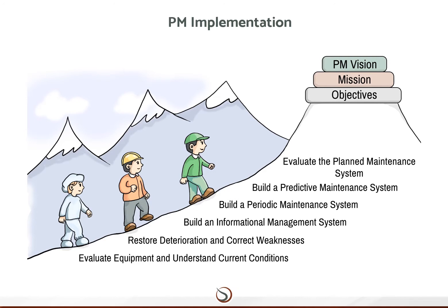This cannot be done all at once — this would be too overwhelming, uncontrollable, and inefficient. Thus, Planned Maintenance is implemented in six consecutive steps.